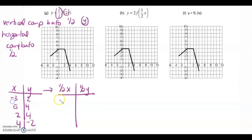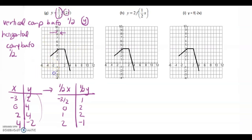Half of x gives us negative 3 over 2, 0, 1, and 2. Half of the y's gives us 1, 2, 2, negative 1. Because they're both compressions, we should get closer to the y-axis, so the domain shortens, and we should get closer to the x-axis, so the range shortens. Graph: negative 3 over 2, 1; then 0, 2; then 1, 2; and 2, negative 1.